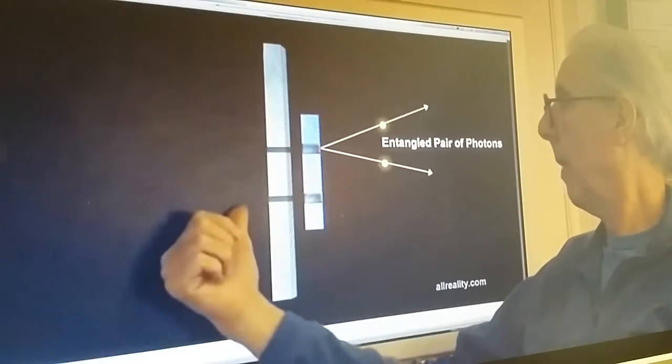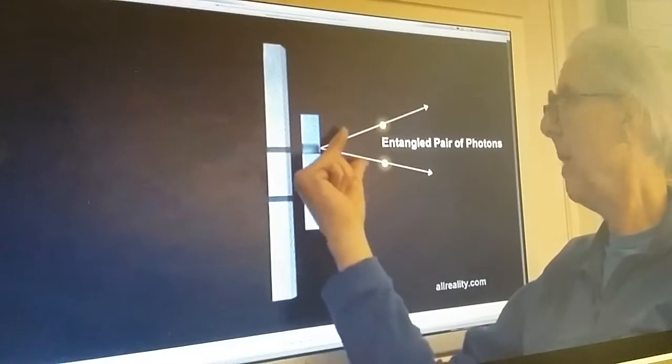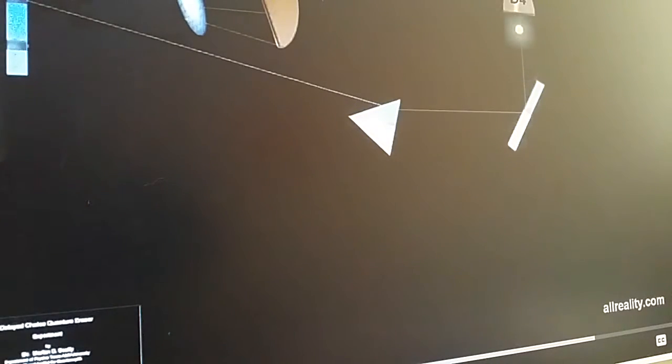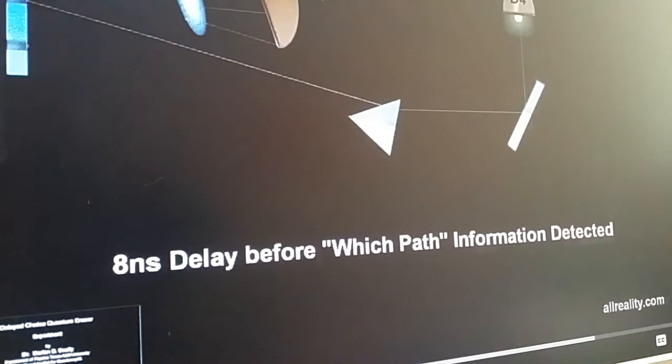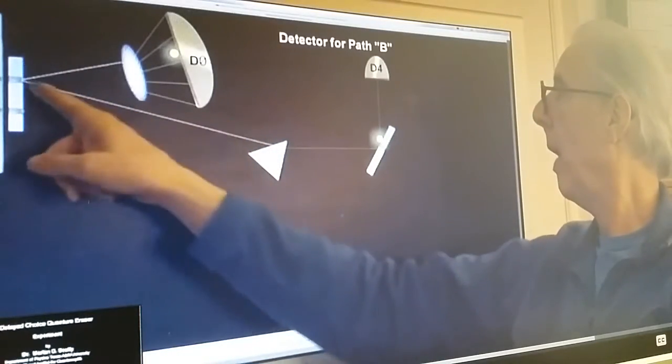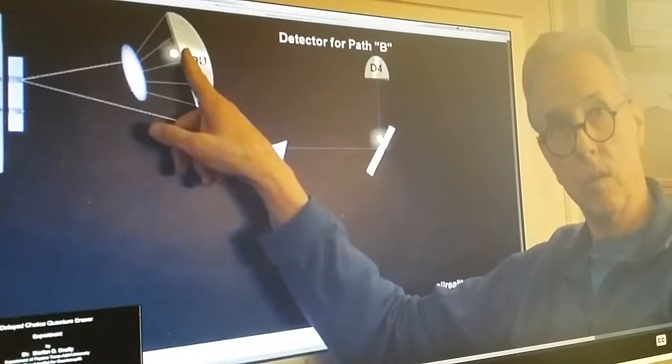When the photon goes through A or B, it spits out an entangled pair of photons. So for the B path, it has a certain path that follows the entangled pair as one, and half of the pair gets registered on the screen.